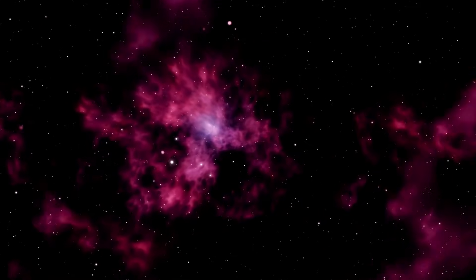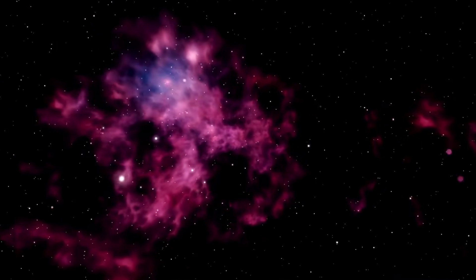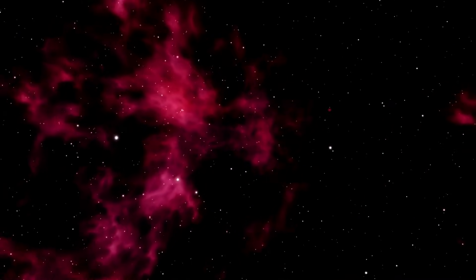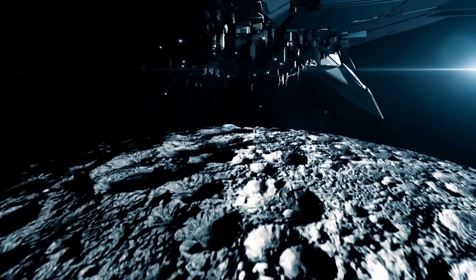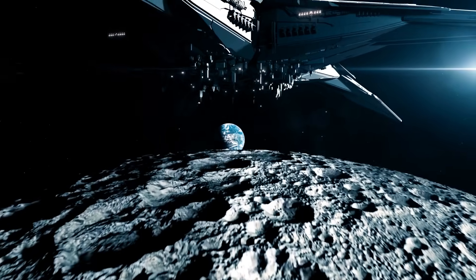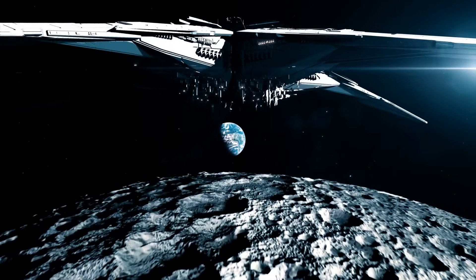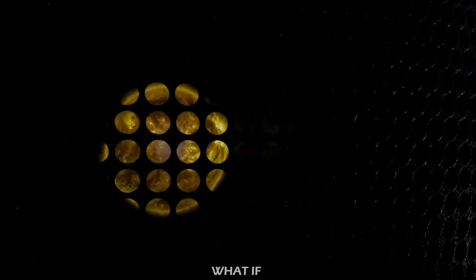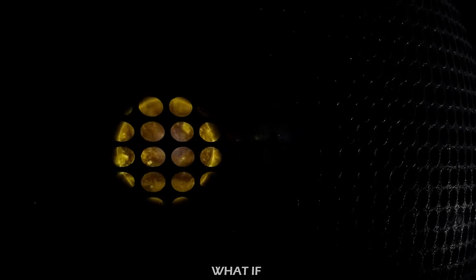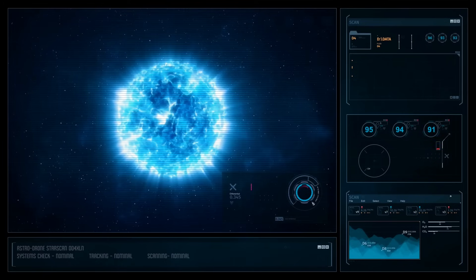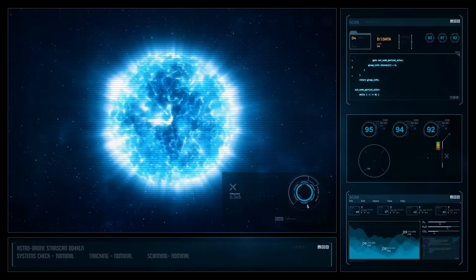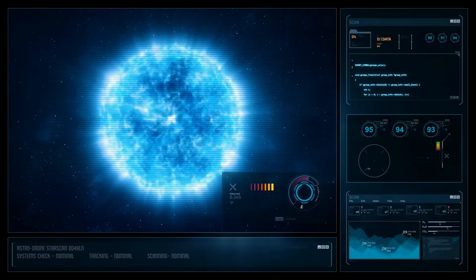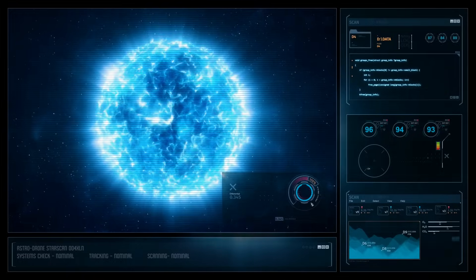Even if they do exist, how could extraterrestrial beings cause an entire star to vanish? It's conceivable that these cosmic beings possess advanced technology capable of manipulating stars for their own purposes. One potential method is utilizing them to construct Dyson Spheres, an imagined device encircling a star to harness its energy, essentially transforming the star into an energy generator or battery for the alien civilization.